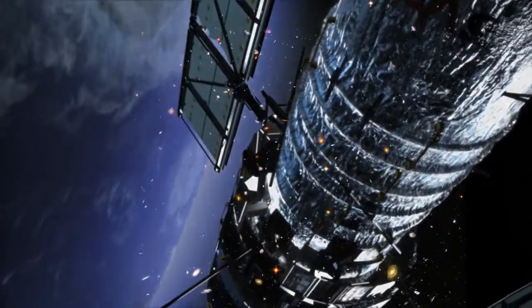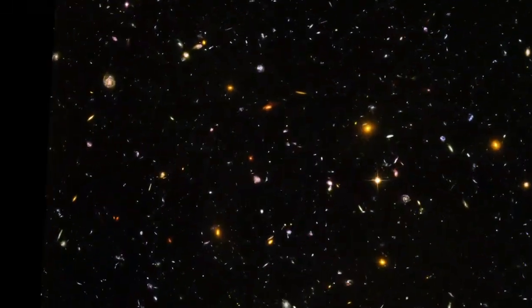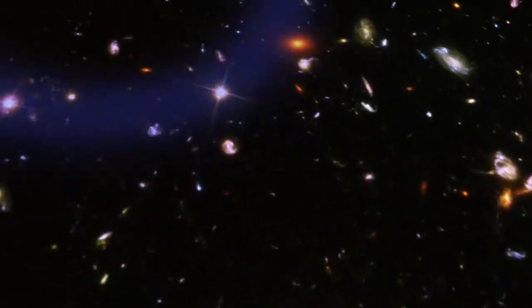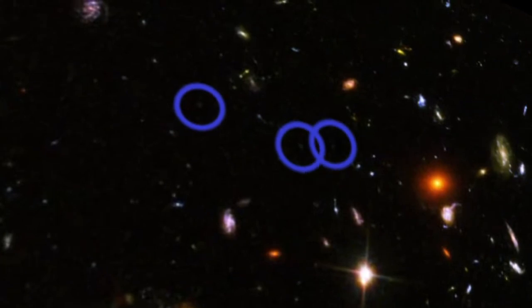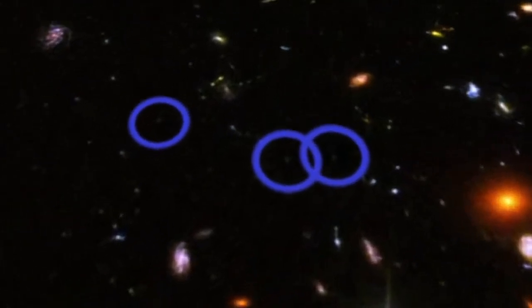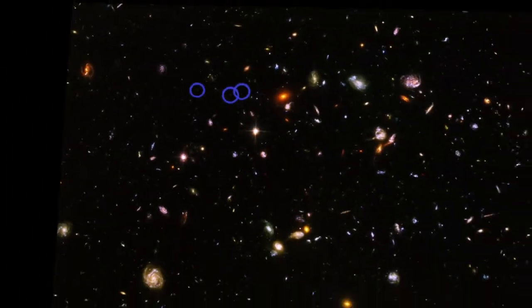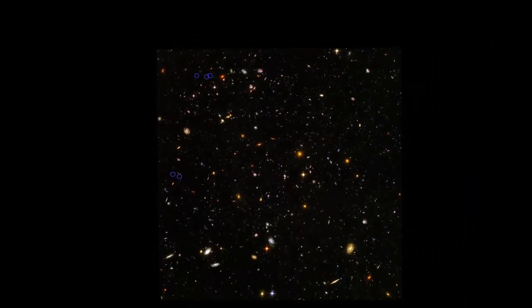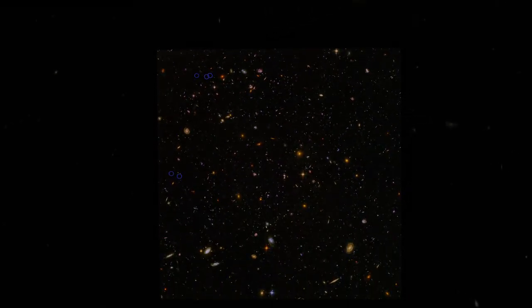This is Hubble's deepest view into space, known as the Hubble Ultra Deep Field. Here, astronomers have found galaxies so far away that their light began its journey to us more than 13 billion years ago. We're seeing these galaxies as they were when the universe was just 600 million years old.